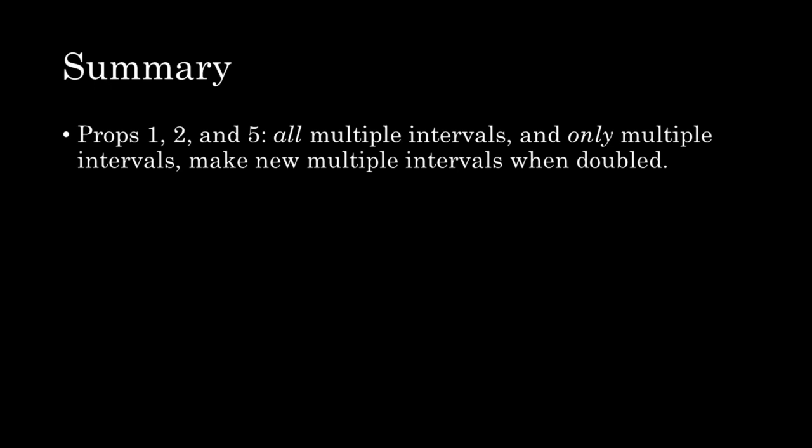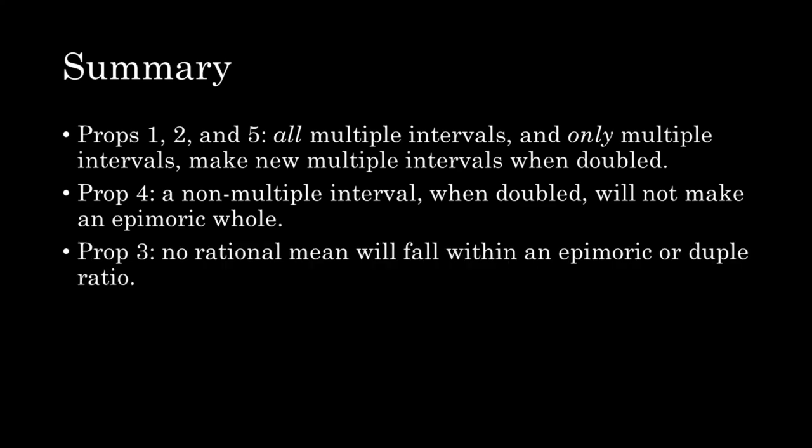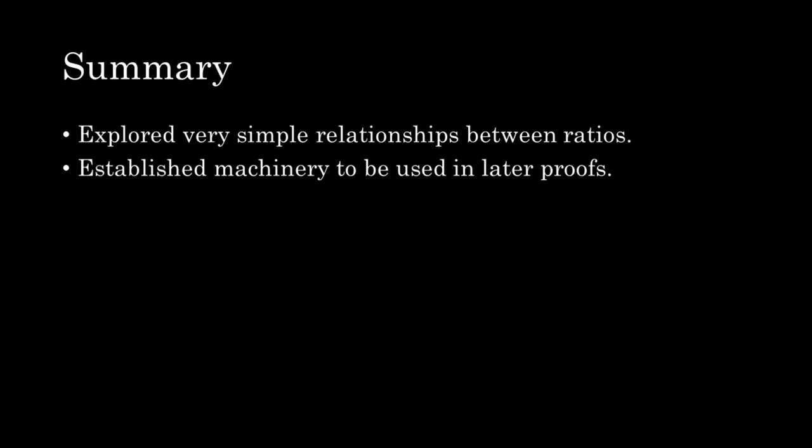Propositions 1, 2, and 5 together tell us that all and only multiple intervals will make new multiple intervals when doubled. Proposition 4 tells us, in addition to what we already know, that a non-multiple interval when doubled will not make an epimoric whole. Proposition 3 tells us that no rational mean will fall within an epimoric or duple ratio. Much of what we've covered here has explored very simple relationships between ratios — these propositions are concerned with establishing machinery that will be used in later proofs. If your primary interest is music theory, you may not have found much to catch your interest in these first five propositions. I believe Proposition 3 in particular has important consequences for harmonics and tuning theory, consequences that are too far-reaching to fully address here. It's worth pondering.